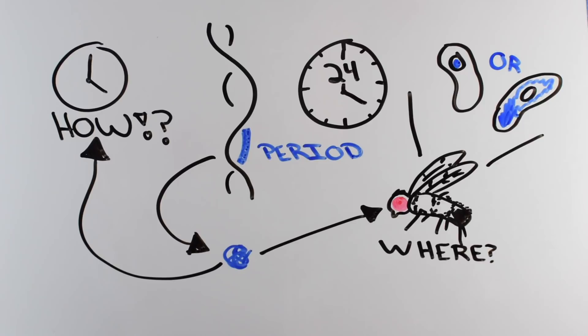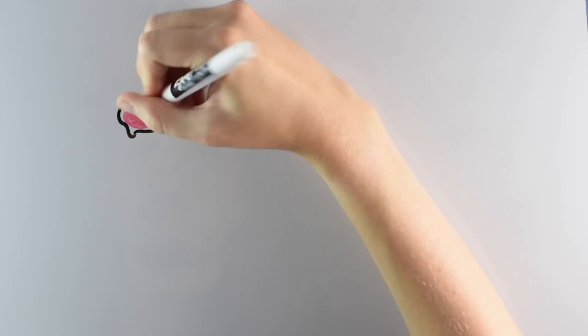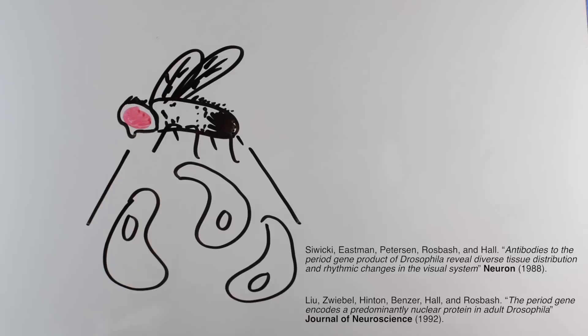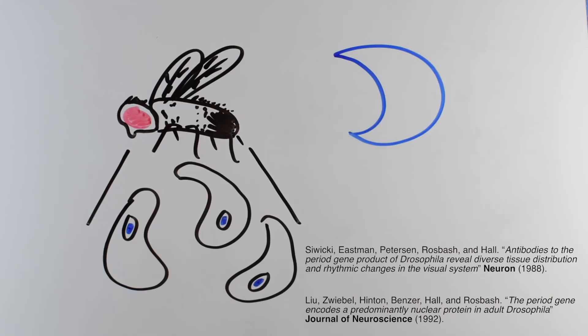In 1988, a few of those questions were answered. A new paper came out that revealed that the period protein is in the nucleus of cells scattered throughout the body of the fly, and that period was found more during the night, with very little around during the day. This was the first hint that period was cycling in the same way that day and night do.